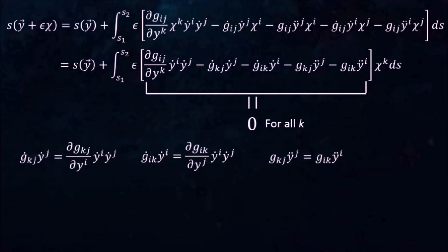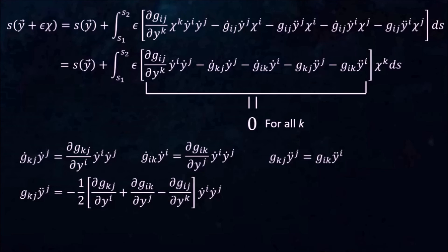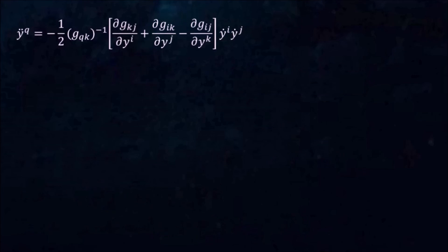Recognizing these identities, we can cast this condition into a nicer form. Multiplying both sides by the inverse metric g^(qk) inverse and summing over k liberates the second derivative term on the left-hand side. And we end up with this equation.